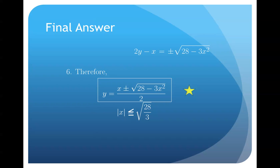When we do that, we'll get that y equals x plus or minus the square root of 28 minus 3x squared over 2. And when we solve for the domain of x, we should get that x should be between negative square root of 28 over 3 and positive square root of 28 over 3.